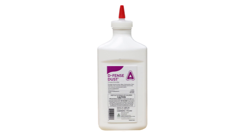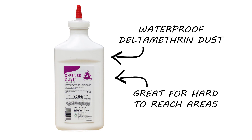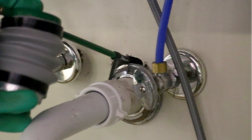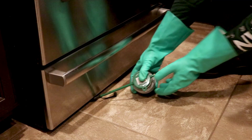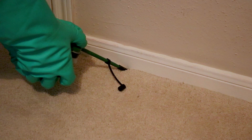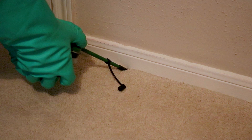Finally, use Defense Dust around your home. This is a waterproof insecticidal dust that is great for applications to hard-to-reach areas. Using a duster, apply Defense Dust inside wall voids, under appliances, under baseboards, and into points of entry, like weep holes or where pipes penetrate the wall.